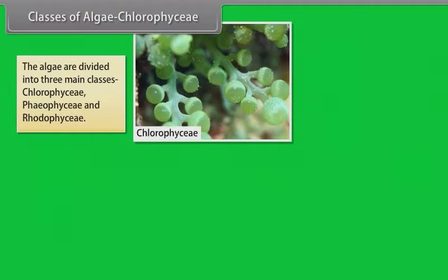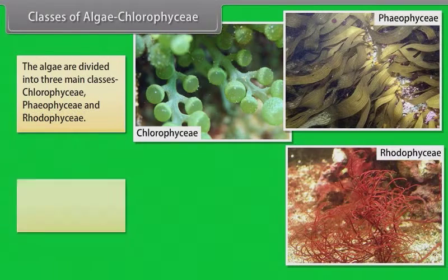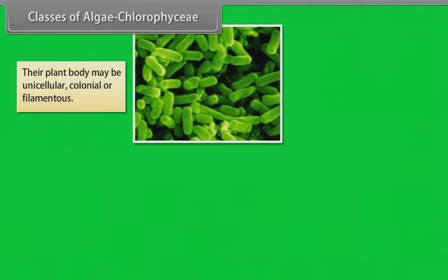Chlorophyceae. The algae are divided into three main classes: Chlorophyceae, Phaeophyceae, and Rhodophyceae. The Chlorophyceae is commonly called green algae. Their plant body may be unicellular, colonial, or filamentous.